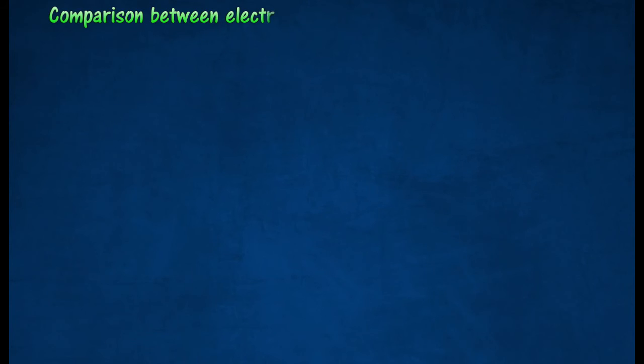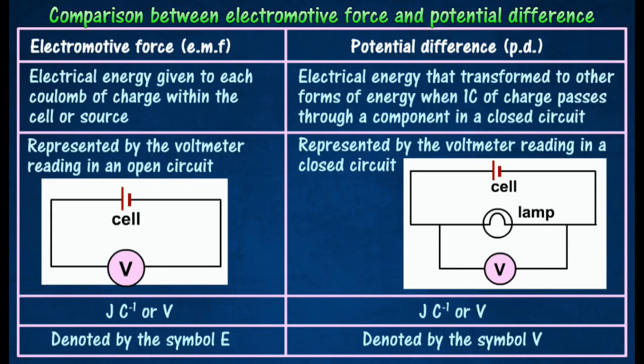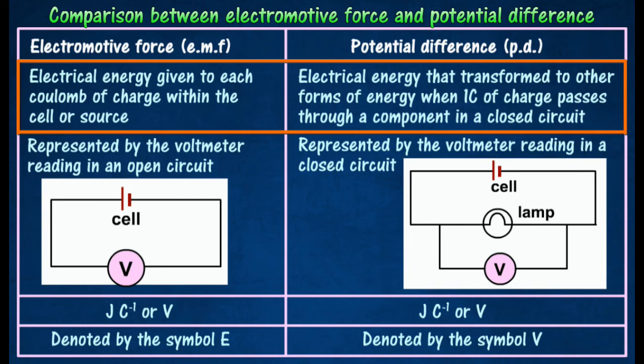The table shows the comparison between electromotive force and potential difference. Electromotive force indicates the electrical energy given to each coulomb of charge within the cell or source, while potential difference indicates the electrical energy that is transformed to other forms of energy when 1 coulomb of charge passes through a component in a closed circuit.